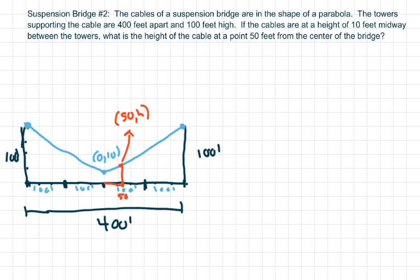Hi everyone, we're going to do another suspension bridge problem. This one's a little harder because our origin is not at zero zero — the cables are at a height of 10 feet midway between the towers. We're also finding the height, but we're going to set up like we did the previous problem.